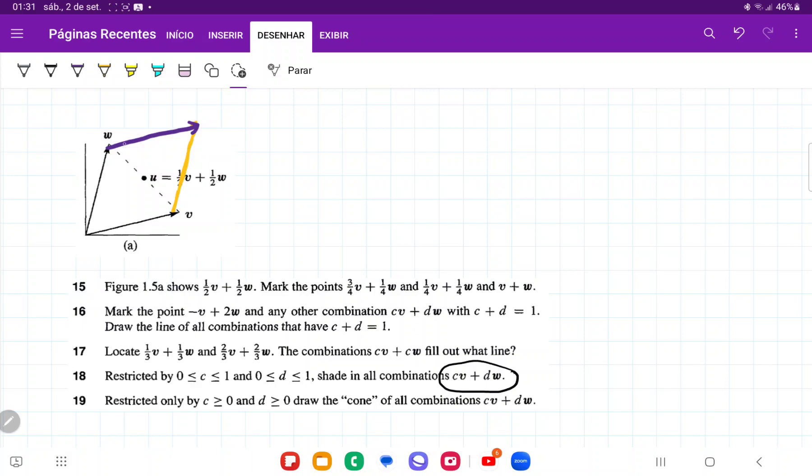We can't ever go beyond this shape because we can't ever add a v greater than one and we can't ever add a w greater than one. So we could never be out here, for example.